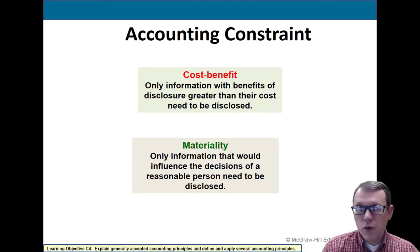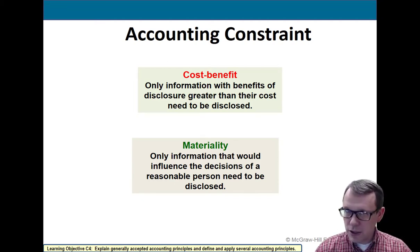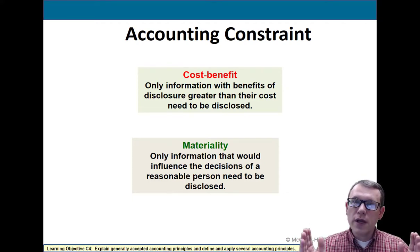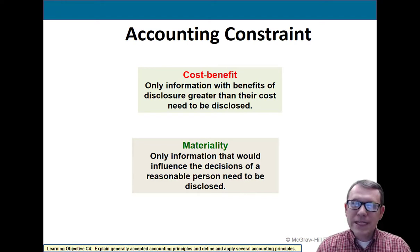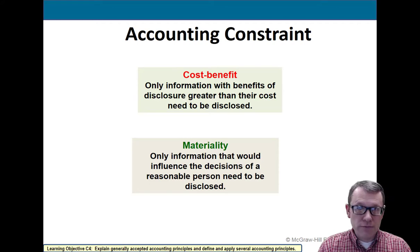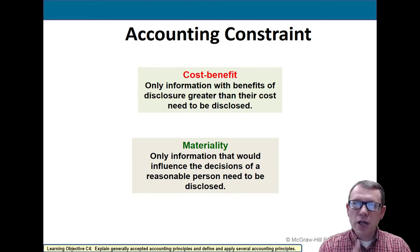Auditors base things on materiality depending on the size of the organization. For example, they might say anything bigger than a thousand-dollar error is material — something we need to worry about. A larger company might set that threshold at ten or twenty thousand. However, materiality doesn't come into play if something is fraudulent. If it's fraudulent, even one dollar is important and needs to be investigated.